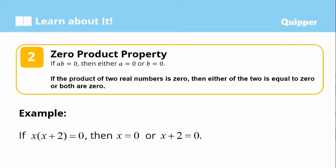The second term to be defined is the zero product property. If a times b is equal to zero, then either a is equal to zero or b is equal to zero. If the product of two real numbers is zero, then either of the two is equal to zero, or both are zero. For example, if x times the quantity (x + 2) equals zero, then x equals zero or x + 2 equals zero.